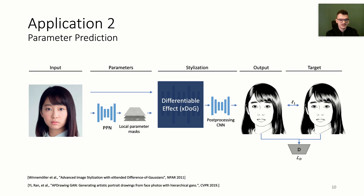As a second application, we propose to use differentiable filters in combination with convolutional networks, or CNNs, to achieve higher accuracy for fitting stylization tasks. We therefore introduce a parameter prediction network, or PPN, to predict parameters of differentiable filters. In this case, we use the Extended Difference of Gaussians, or XDoG filter, which generates black and white stylizations. Since simple stylization filters such as the XDoG lack the capacity to achieve complex image-to-image translation tasks, we also introduce an optional post-processing CNN.